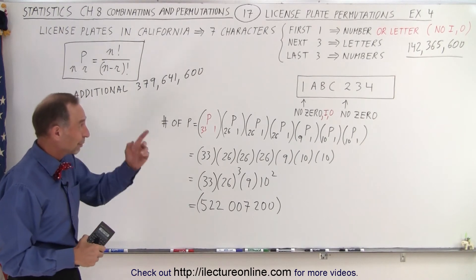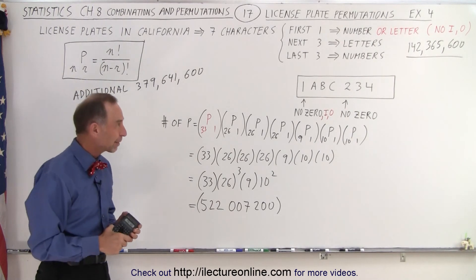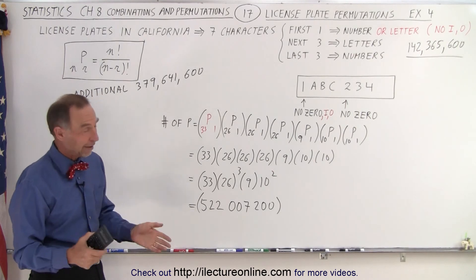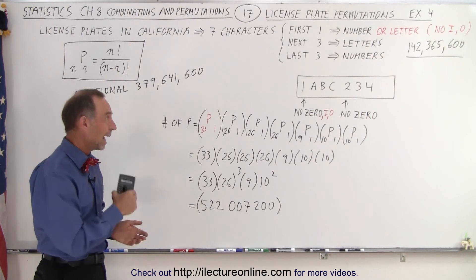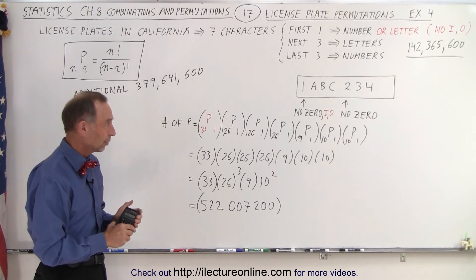But at least, notice we went from 142 million to 522 million. So that's a big plus by making that one little change in the front, instead of just a number without having a zero as a possibility, we can add 24 more letters because we're not allowing I or an O.